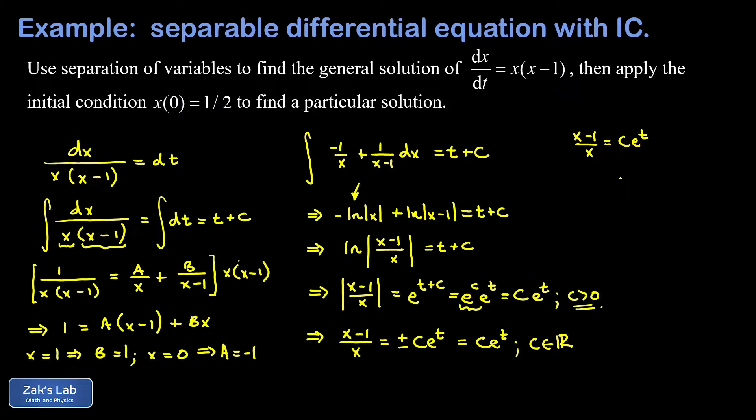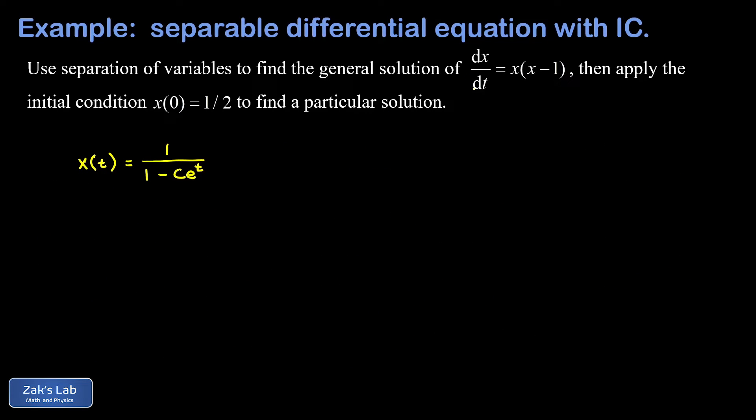And I still want to solve for x as a function of time explicitly. So what we're going to do here is multiply both sides by x, and then gather all the x containing terms on one side of the equation. So I end up with x-1 equals x·c·e^t. And then I subtract this term, x·c·e^t, and I add 1 to both sides. And this gives me x - x·c·e^t equals 1. Factoring out the x, I get x(1 - c·e^t) equals 1. And finally, I arrive at my general solution of the differential equation, x as a function of time. So x(t) is 1 over (1 - c·e^t). So this is the general solution of our first order differential equation.